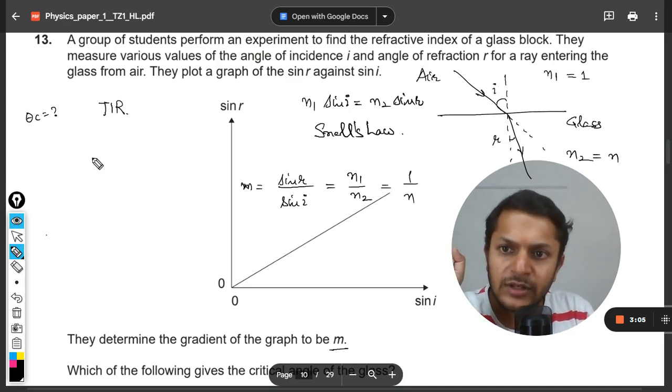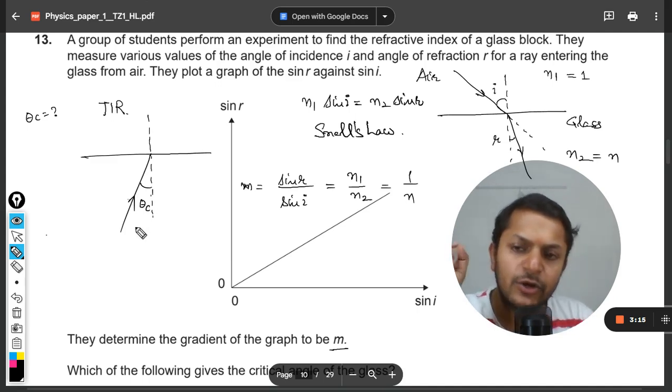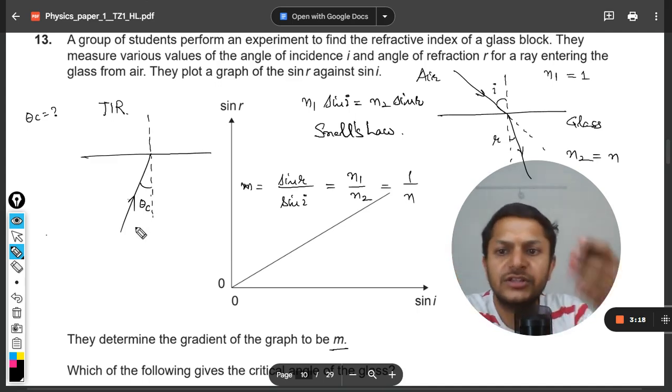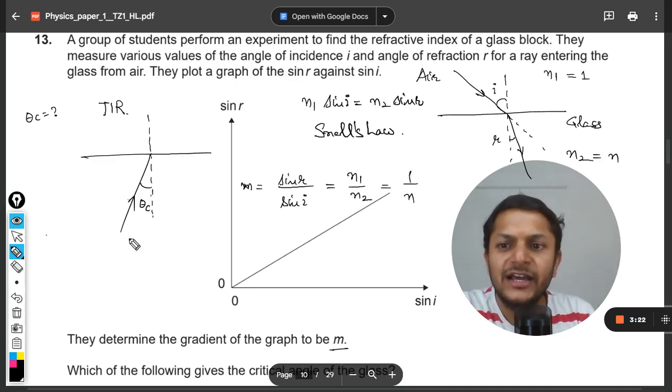Now we are moving to the total internal reflection. So let me first explain what is happening in TIR. It's like that. So this is the angle at which, let me call this as theta critical. So this is the angle at which the ray is coming.